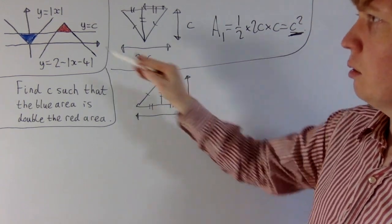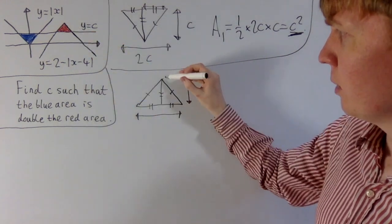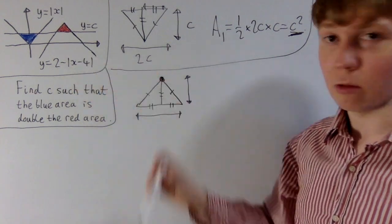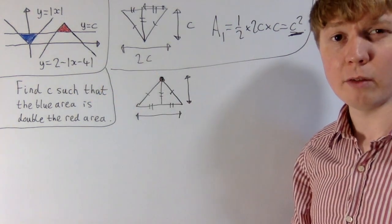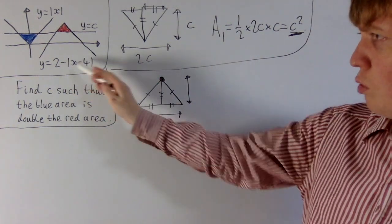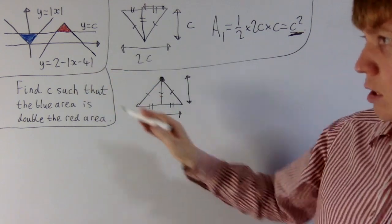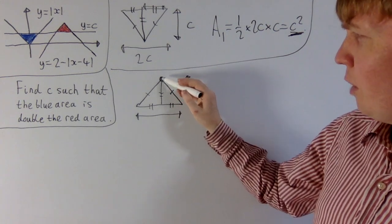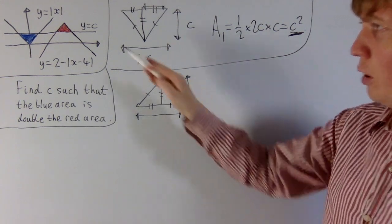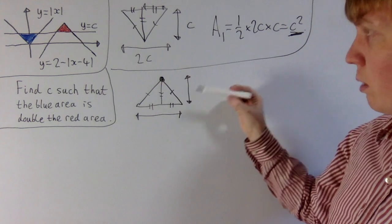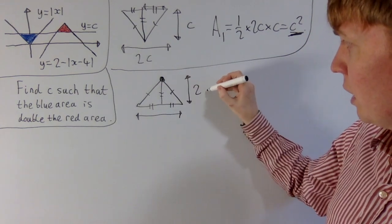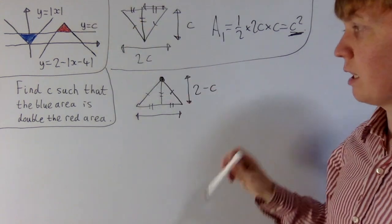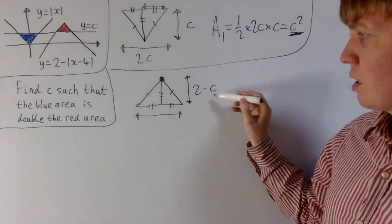So the height of the triangle, we start off at this point at the top of our function. So let's think, what is the maximum point of this function, y equals 2 minus absolute value of x minus 4? Well we've got 2 minus something that's non-negative, so the maximum value this can take is 2. So our height here, at the very top we're at 2, and then how far down do we go? We go down to the line y equals c. So the height of this triangle is going to be 2 minus c. Start off at height 2, go down to height c. So the distance you travel is 2 minus c.